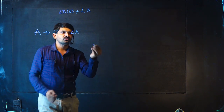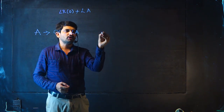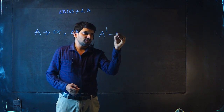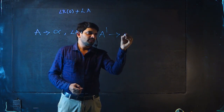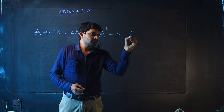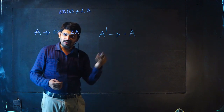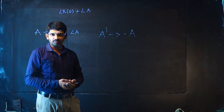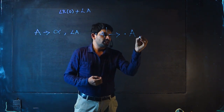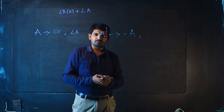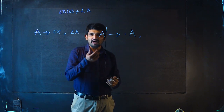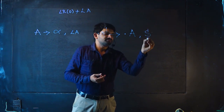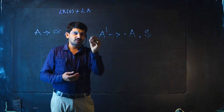The first rule: for the given grammar, we add the augmented production where capital A is the start symbol of the grammar. For every augmented production, by default, the lookahead is dollar ($). This is the first rule.